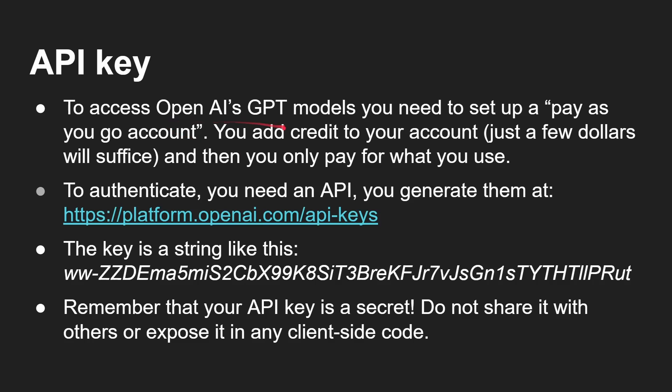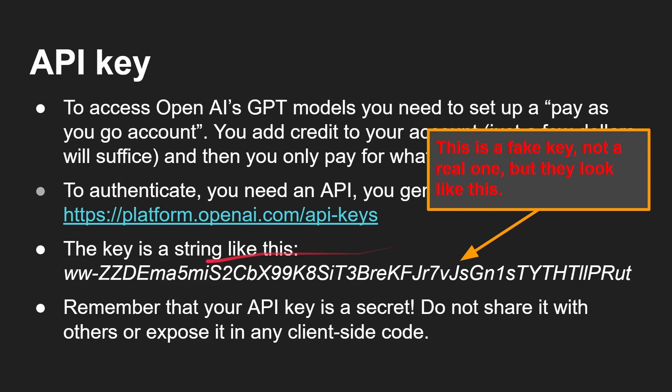To access OpenAI's GPT model you need to have set up a pay-as-you-go account. You add credit — which is normally a few dollars — and then you're able to use the account and it deducts as you go along. You can't get into debt; it's a pay-as-you-go setup, which is brilliant. If you put ten dollars on it, it will last you a long time because we're talking about cents or fractions of a cent per call. The key will look something like this — a big long string. Remember your API key is secret; do not share it with others or expose it in any client-side code. Funny story — by mistake I uploaded the wrong version to GitHub with my API key in it, and I instantly got an email from OpenAI saying your key has been rescinded because we've detected it in public. So just to note, the one shown is a fake key, but that's what they look like.